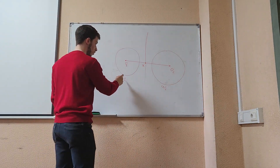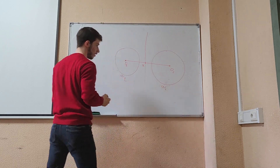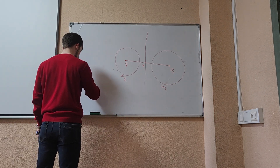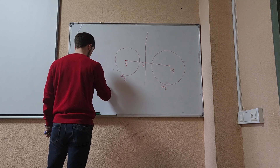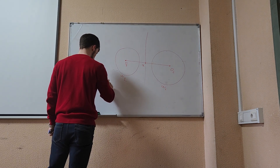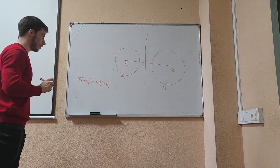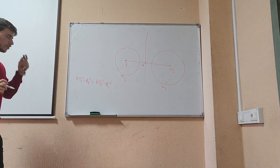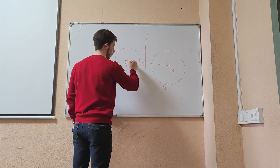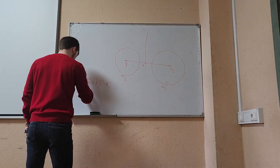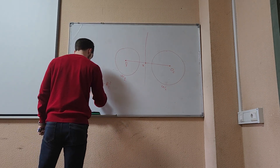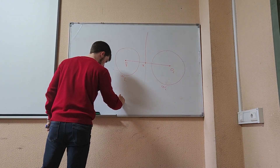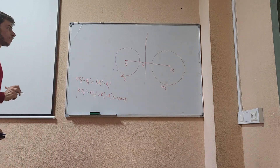Let's find a point K whose power with respect to omega 1 and omega 2 are equal. So KO1 squared minus R1 squared must equal KO2 squared minus R2 squared. Since R1 and R2 are fixed, we can always find such a point on this line. This gives KO1 squared minus KO2 squared equals R1 squared minus R2 squared, which is constant.